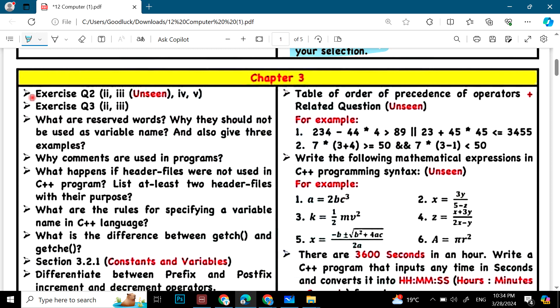Then chapter 3. Exercise question 2.3. What are reserved words? Why they should not be used as variable name and also give three examples? And then why comments are used in programs? What happens if header files were not used in C++ programs? List at least two header files with their purpose.